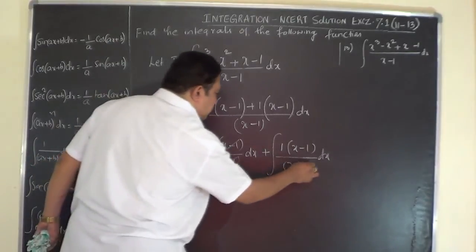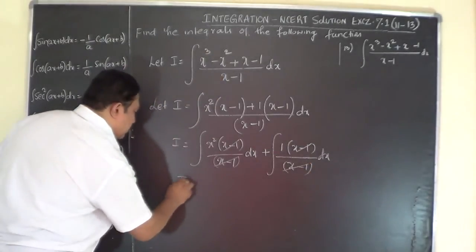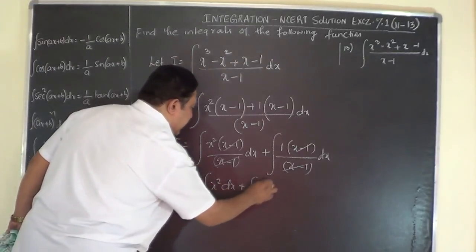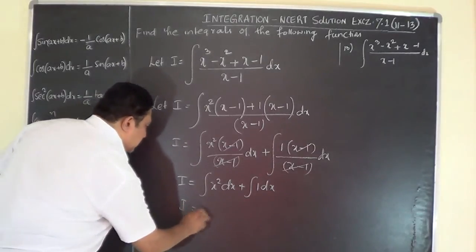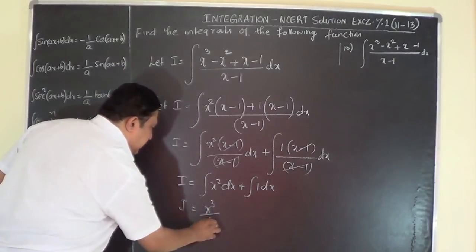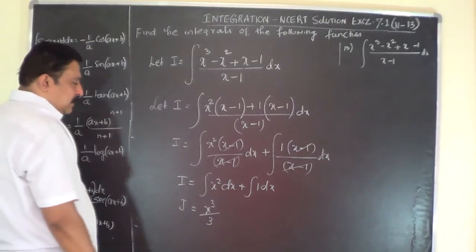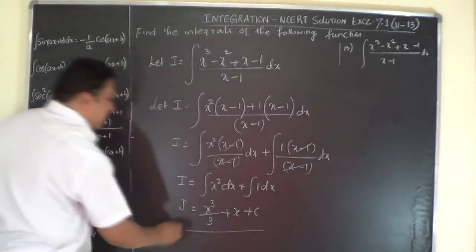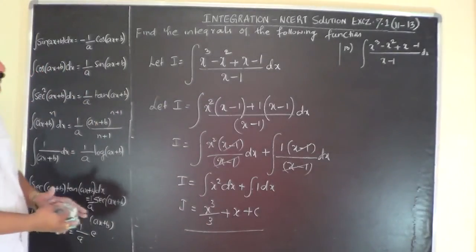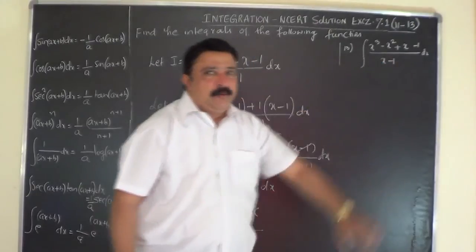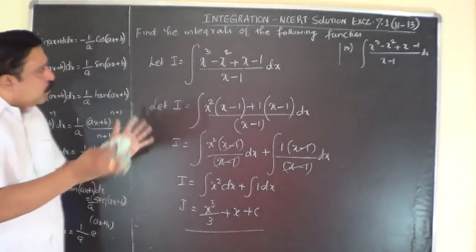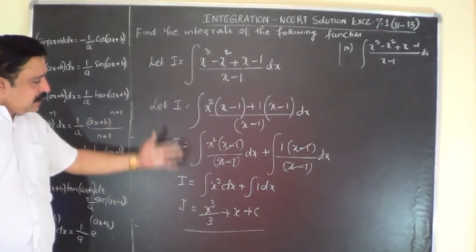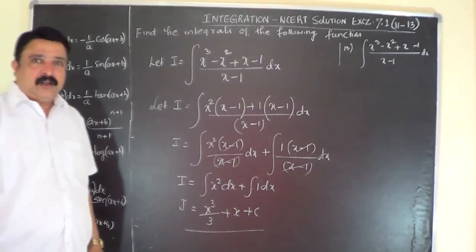Cancel (x - 1) in both fractions, leaving: integral of x² dx plus integral of 1 dx. So I equals x^(2+1)/(2+1) + x + C, which is x³/3 + x + C. If you have a binomial term in the denominator, look for common factors available in the numerator, cancel them, and then proceed with integration.